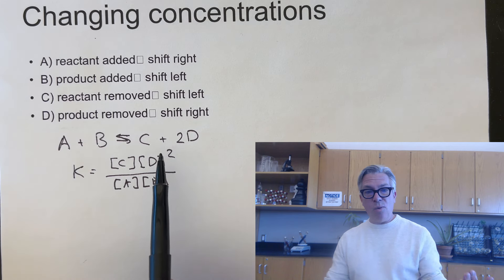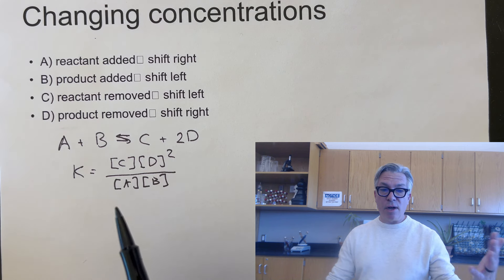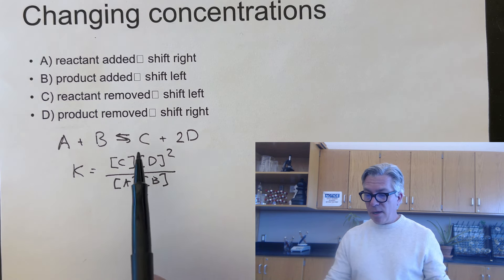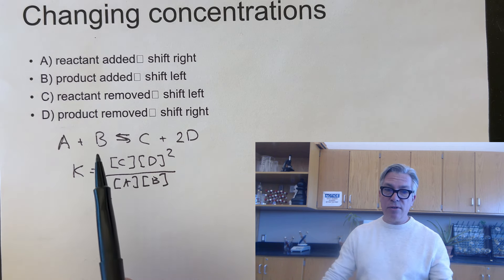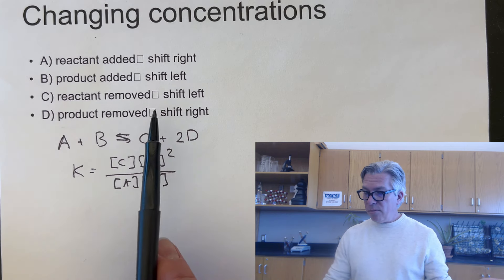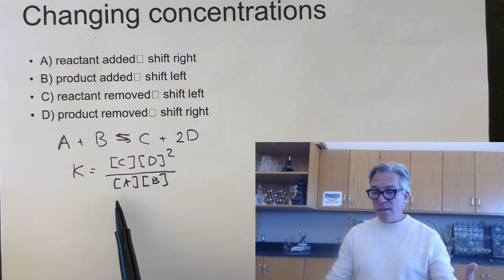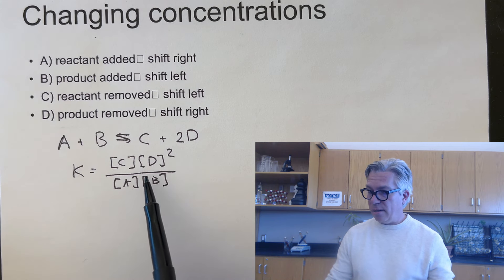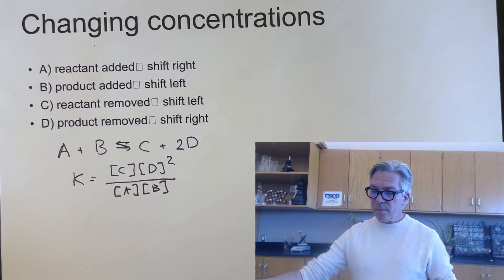If you add a product like C or D, the reaction quotient becomes too large and the system shifts left to get back down to the K value. If you remove a reactant, the denominator gets smaller and Q is too high, so it shifts left. And if you remove a product, it shifts to the right in a similar manner. That's probably the change you'll see most often.